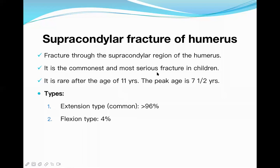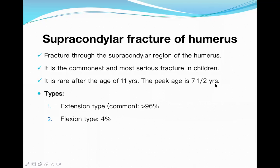Supracondylar fracture of the humerus is the commonest and most serious fracture in children. In any orthopedic trauma center, there will be a few cases every single day. The fracture occurs from the supracondylar region where the diaphysis meets the epiphyseal area, making it relatively weaker. The peak age is seven and a half years, and after age 11 this fracture becomes rare.